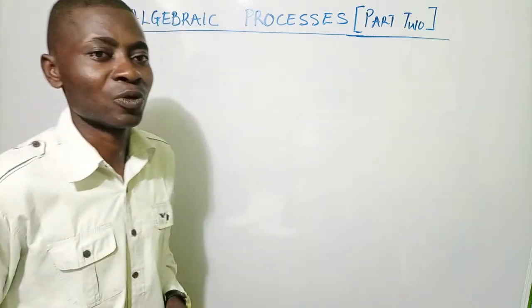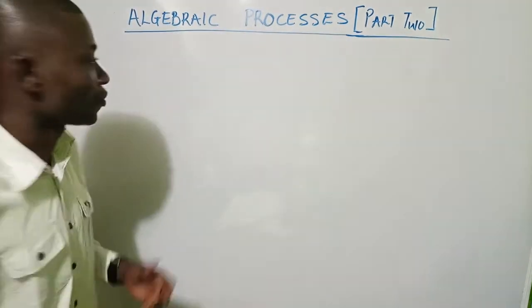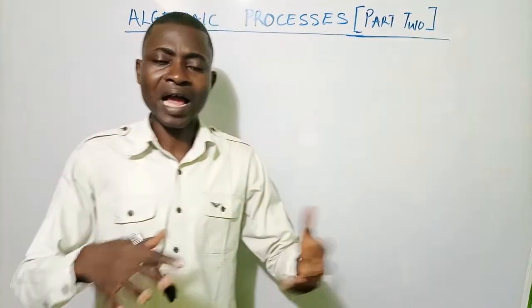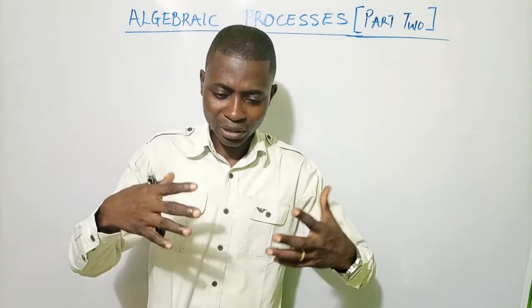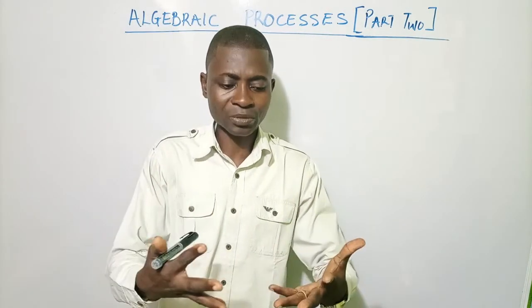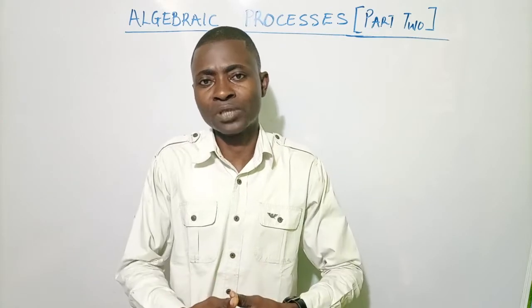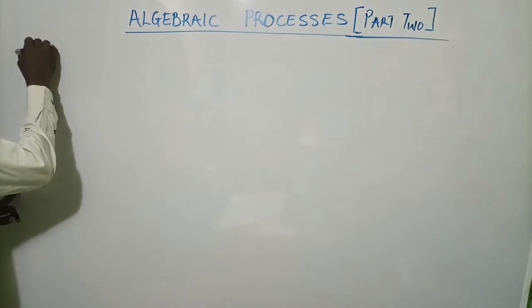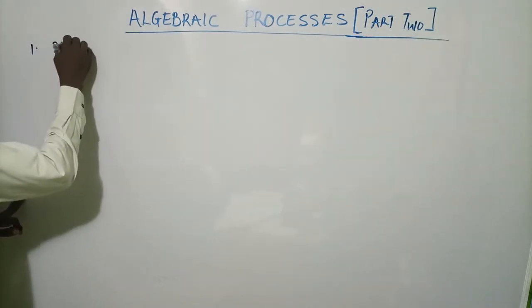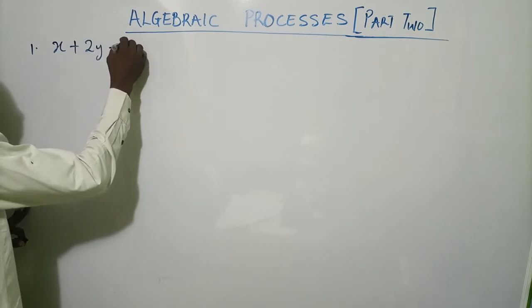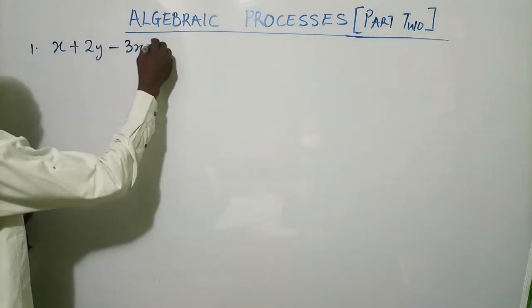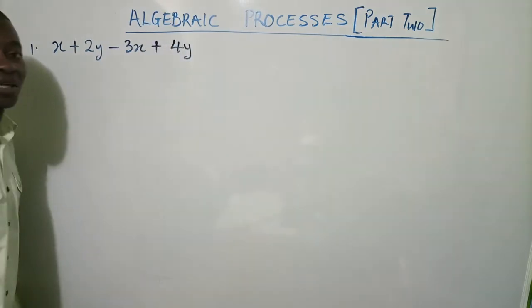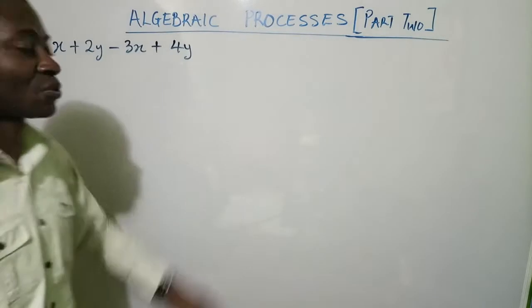We have different aspects that we'll be looking at today. First, imagine that you have different alphabets and you are going to collect like terms. How do we do that? There's something we'll watch out for. For instance, you have something like this: x plus 2y minus 3x plus 4y.